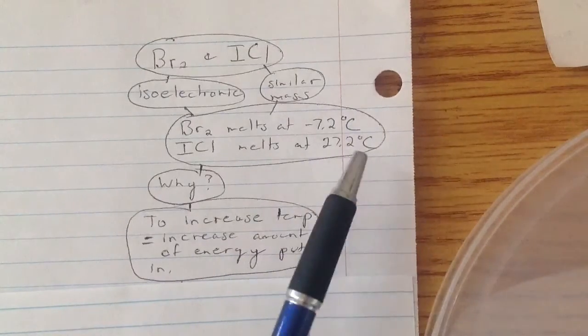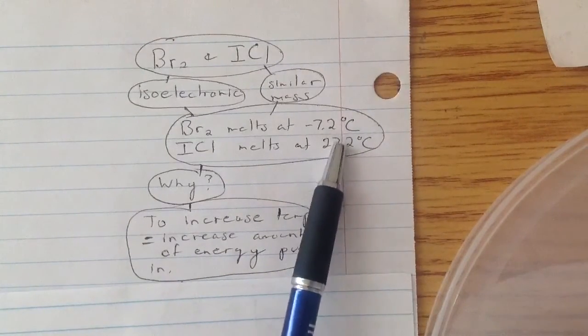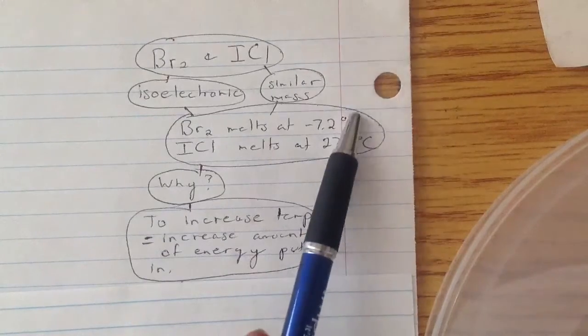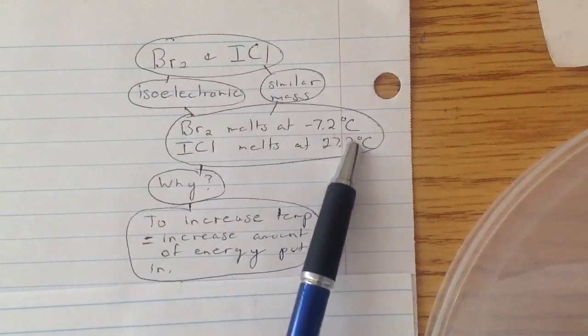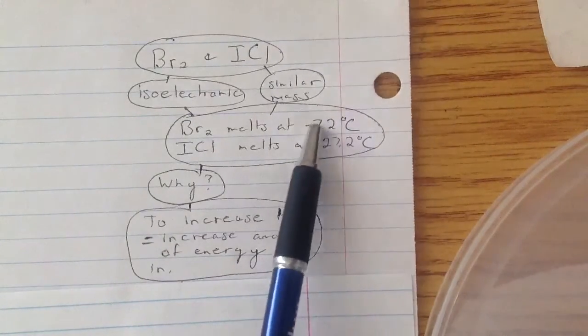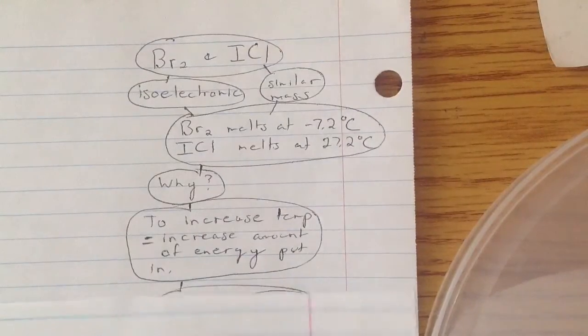So now you're putting in energy. If you look at this, that means ICl has a higher temperature than Br2. So you're putting in more energy for ICl than Br2. Why is that?